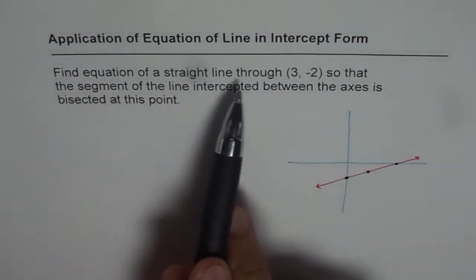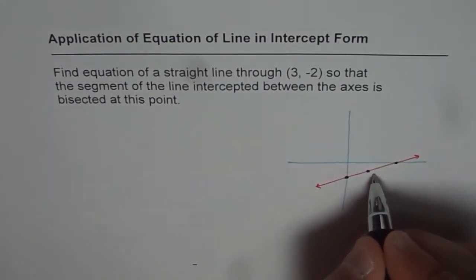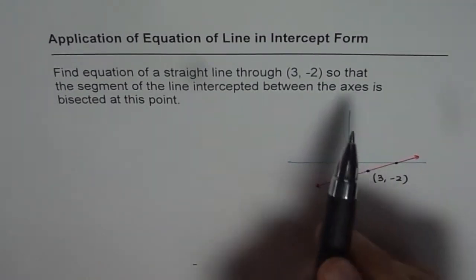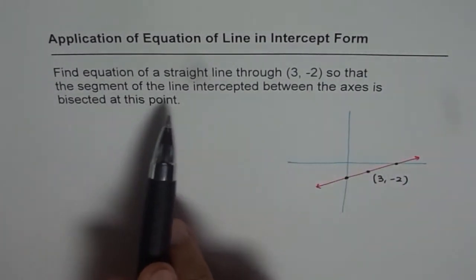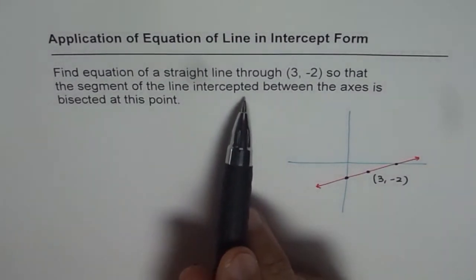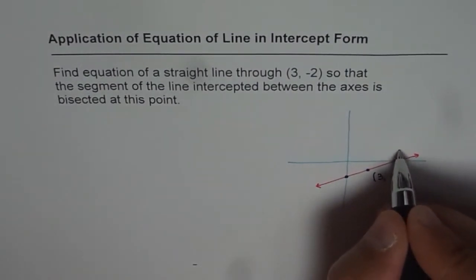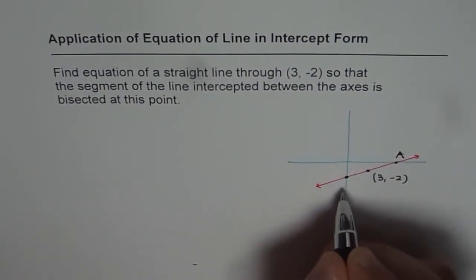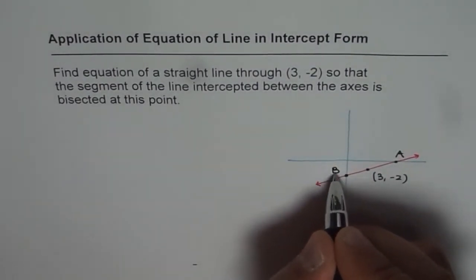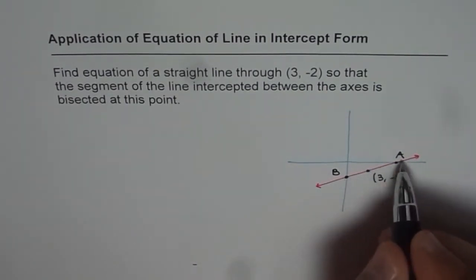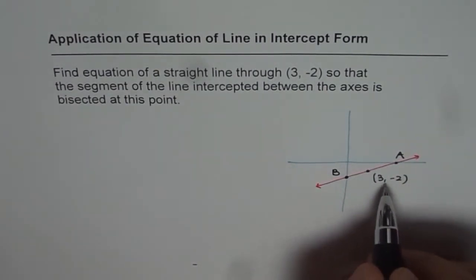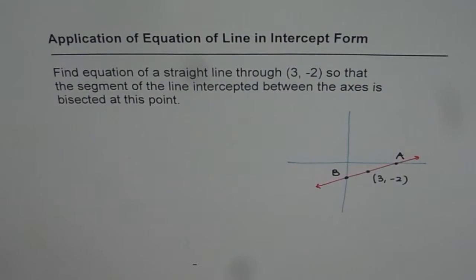Find equation of straight line through point (3, -2). So this point is (3, -2) for us so that the segment of the line intercepted between the axes is bisected. So that is x-axis. Let's call this point as A and this point as B. So the segment AB is bisected by the point (3, -2). So we need to basically find equation of line AB. So that is the question. I hope you appreciate it.